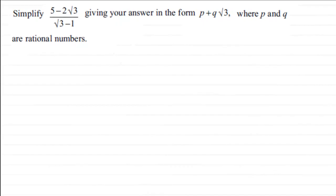Hi, this is a typical example that we can find on surds then. We've got to simplify 5 minus 2 root 3, all divided by root 3 minus 1, giving you an answer in the form P plus Q root 3, where P and Q are rational numbers.